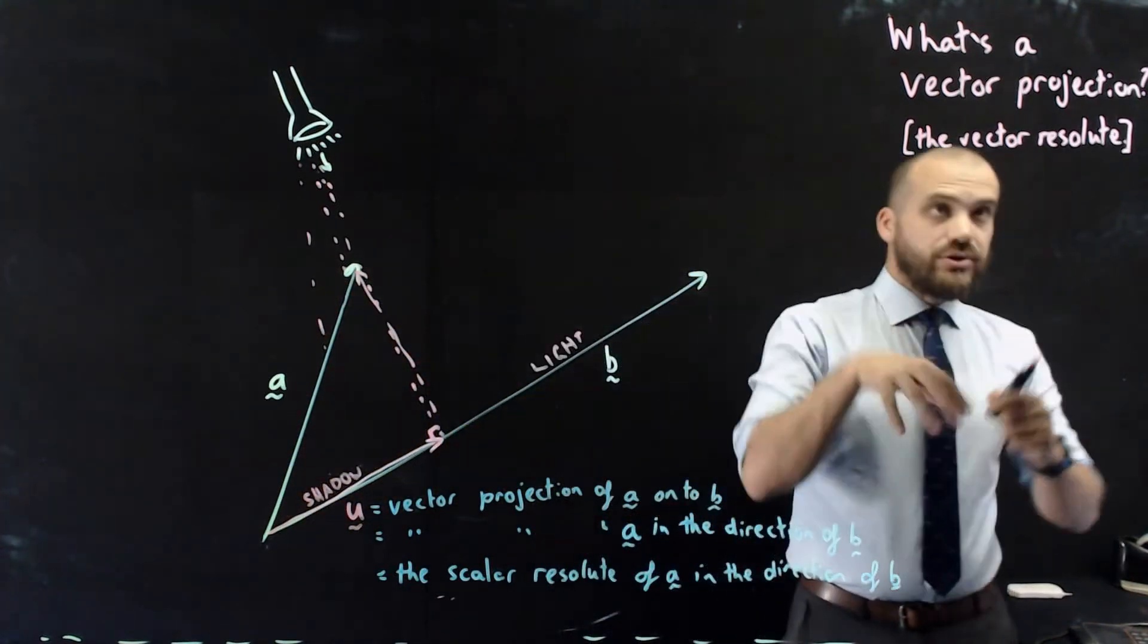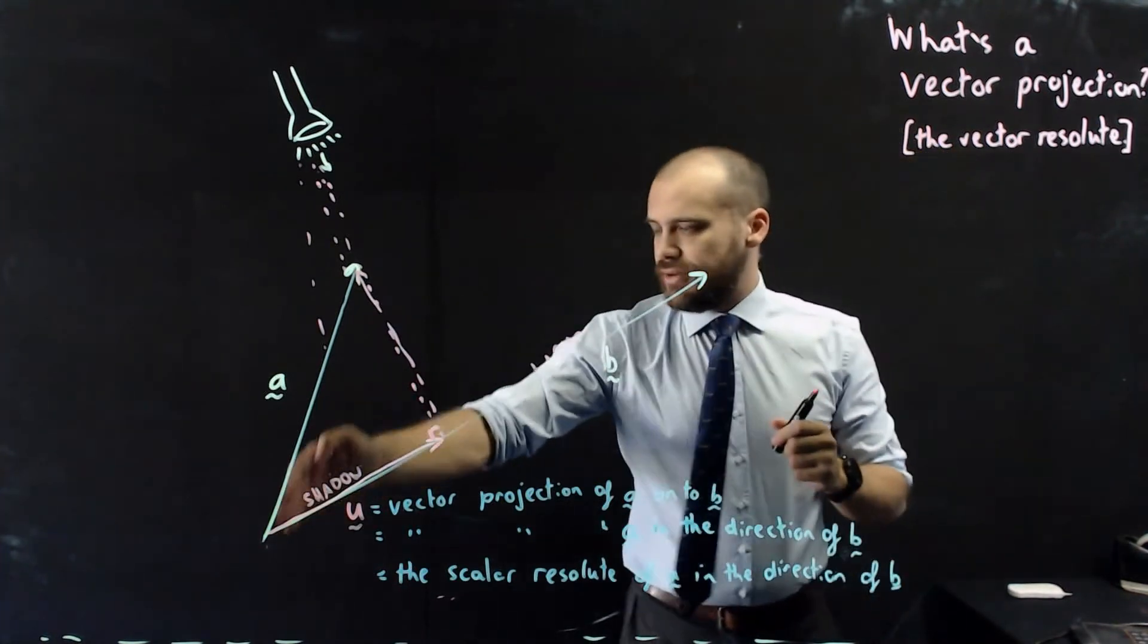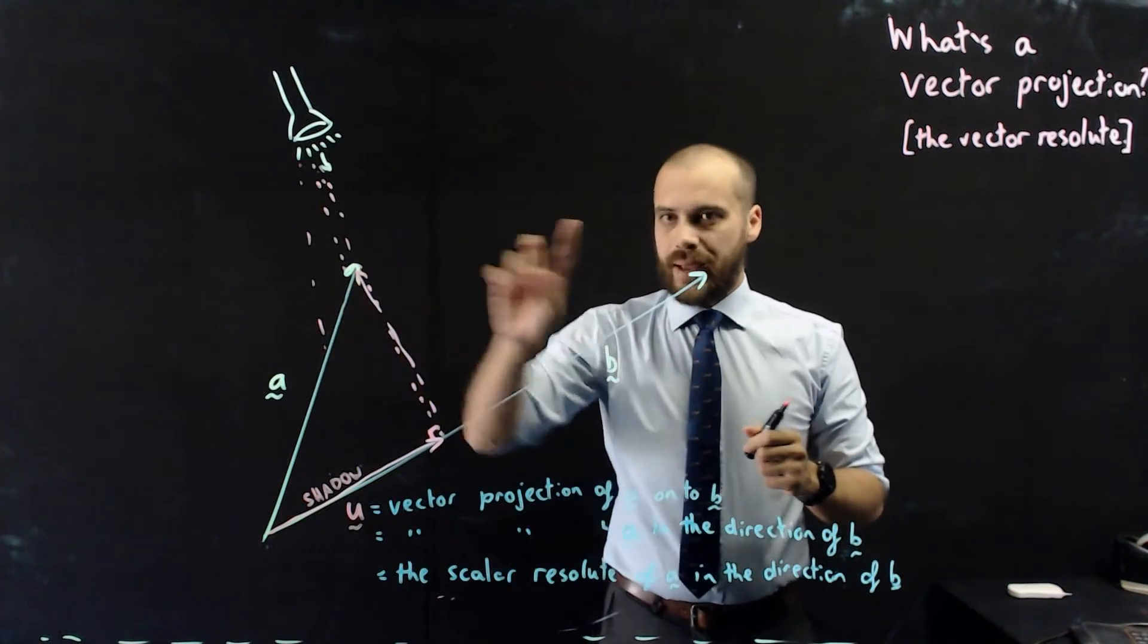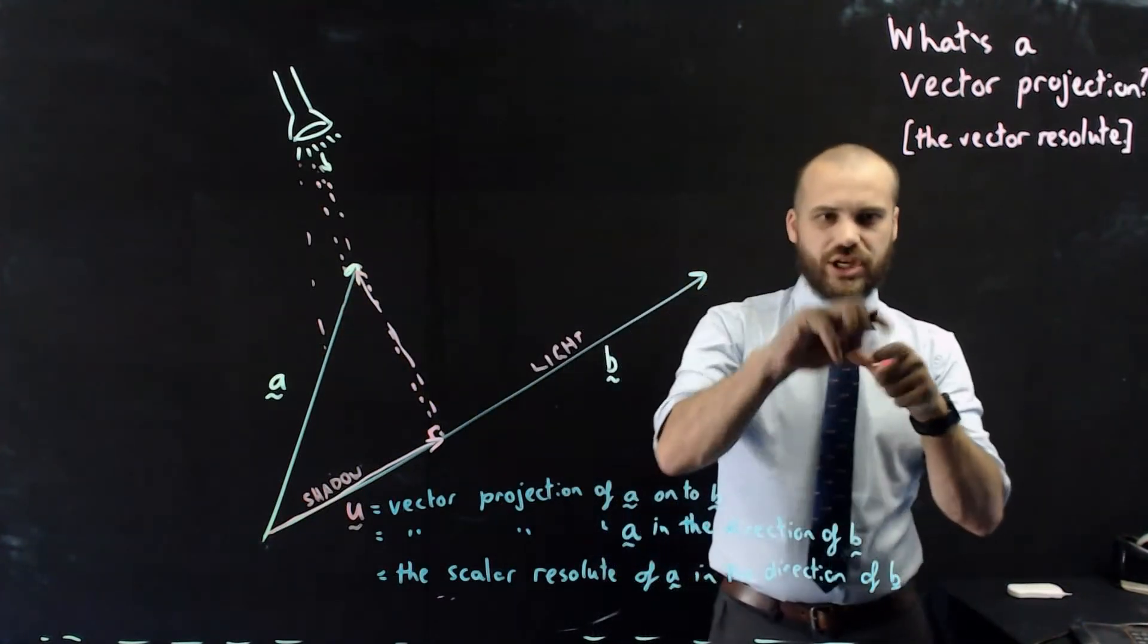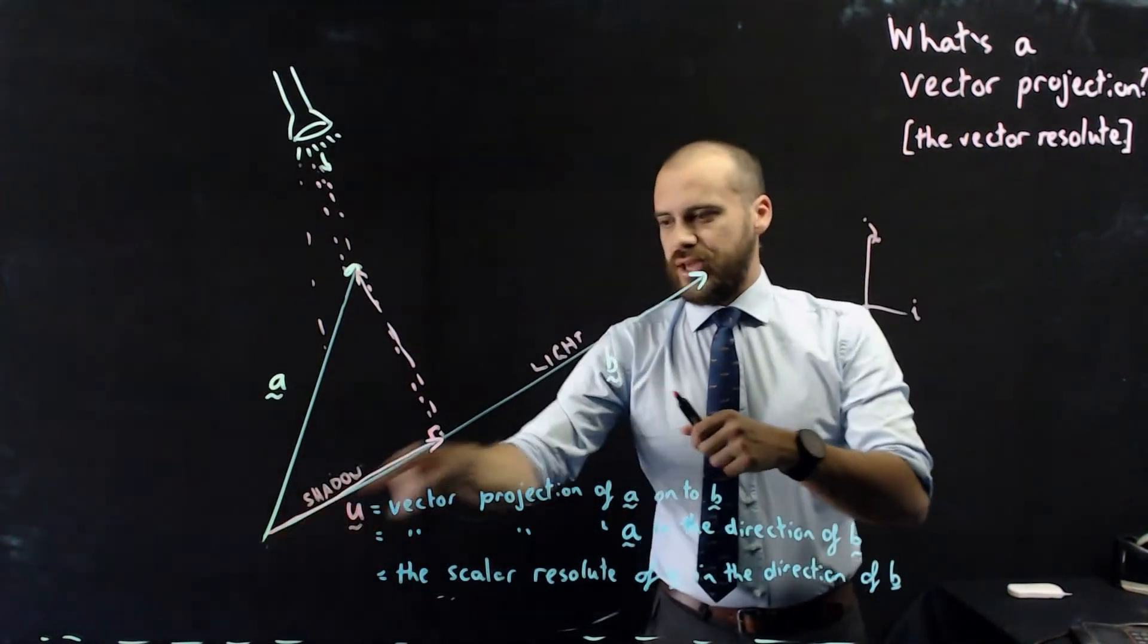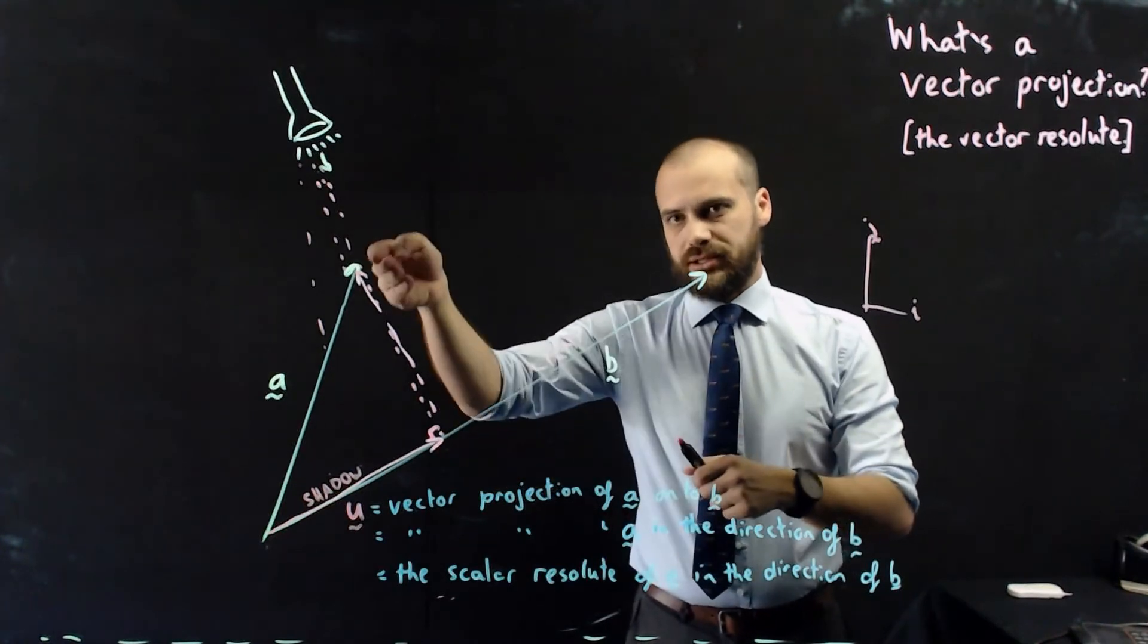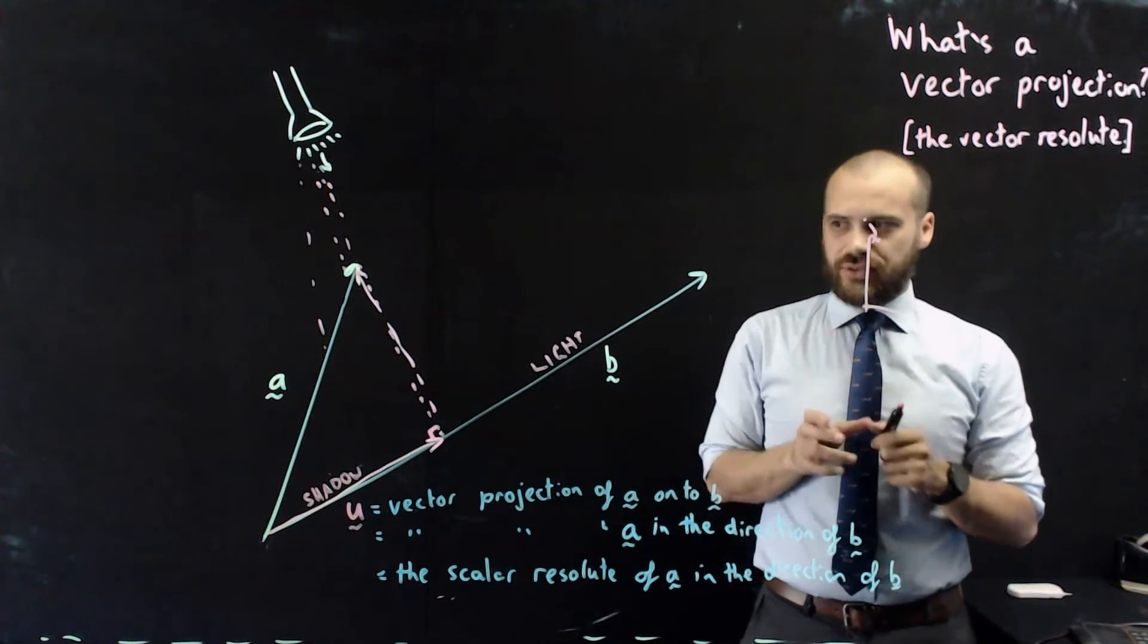So something useful that we can do with vector projections or the vector resolute is take a particular vector A and break it up into component parts, not in terms of I and J like that, but in terms of vector B and perpendicular to vector B. So that's a useful thing to talk about when it comes to vector projections.